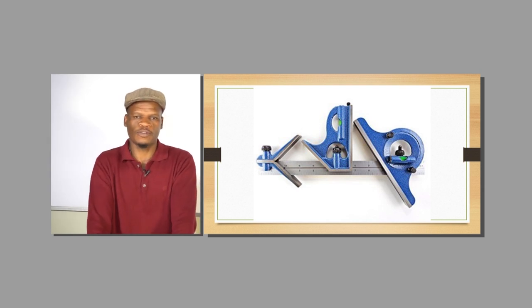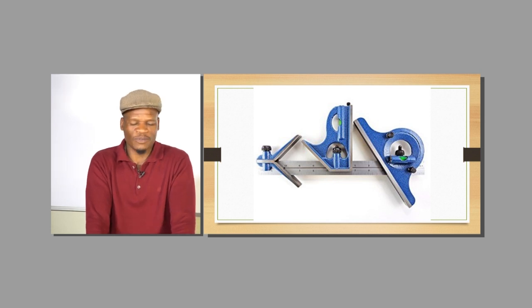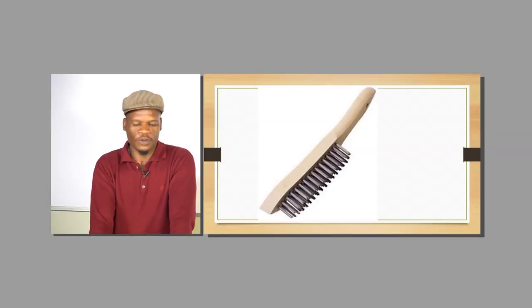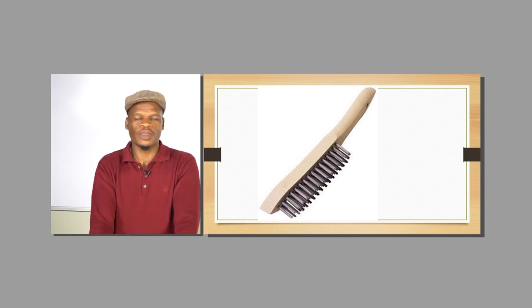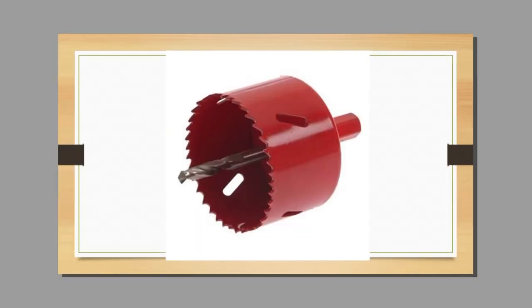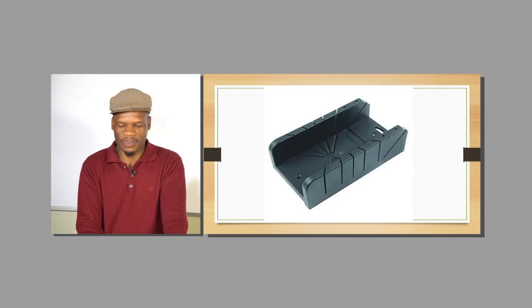The combination square has different purposes — you can use it to measure or draw straight lines, measure angles of 90 degrees, or different angles depending on which fitment you put into the ruler. You can use the center finder to find the center of a round object, which is difficult for most people to identify. The steel brush is used to clean your file after use before storing it. The hole saw is used to drill a hole in materials — for example, to put a split ring — and they come in different sizes for different diameters.